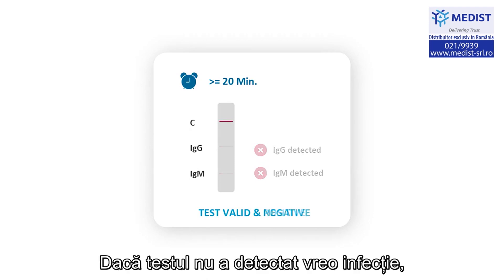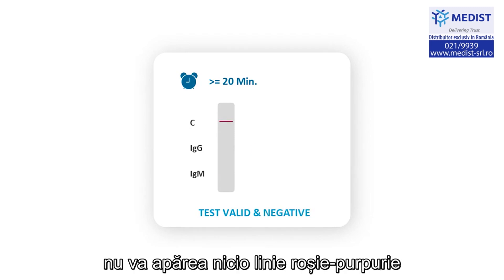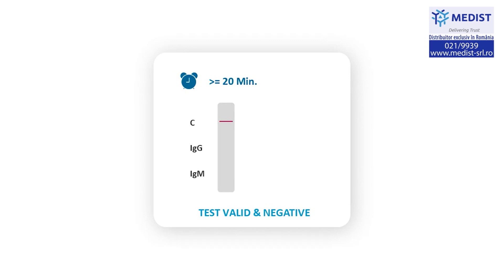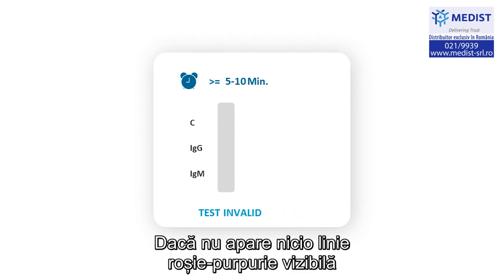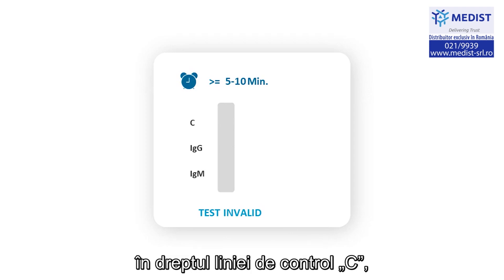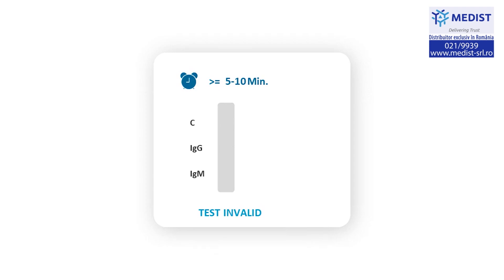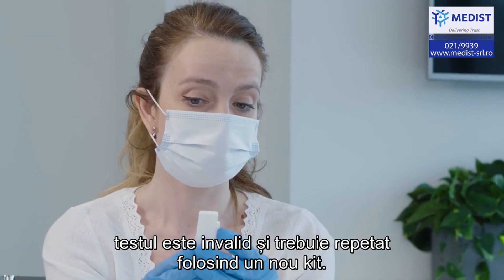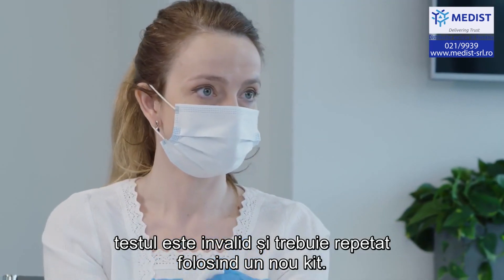If the test has not detected infection, there will be no purplish-red line at either IgM or IgG. If there is no clearly visible purplish-red line at the control line C within the first 5 to 10 minutes, the test is invalid and should be repeated using a new kit.